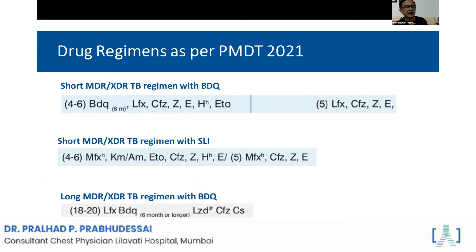We are no longer using kanamycin and capreomycin. We use other drugs like ethionamide, clofazimine, pyrazinamide, ethambutol, and high-dose INH. These are the drug combinations we are using. I am not going into depth here because I want you to understand the overall challenges we face — the most important challenge is correct diagnosis.